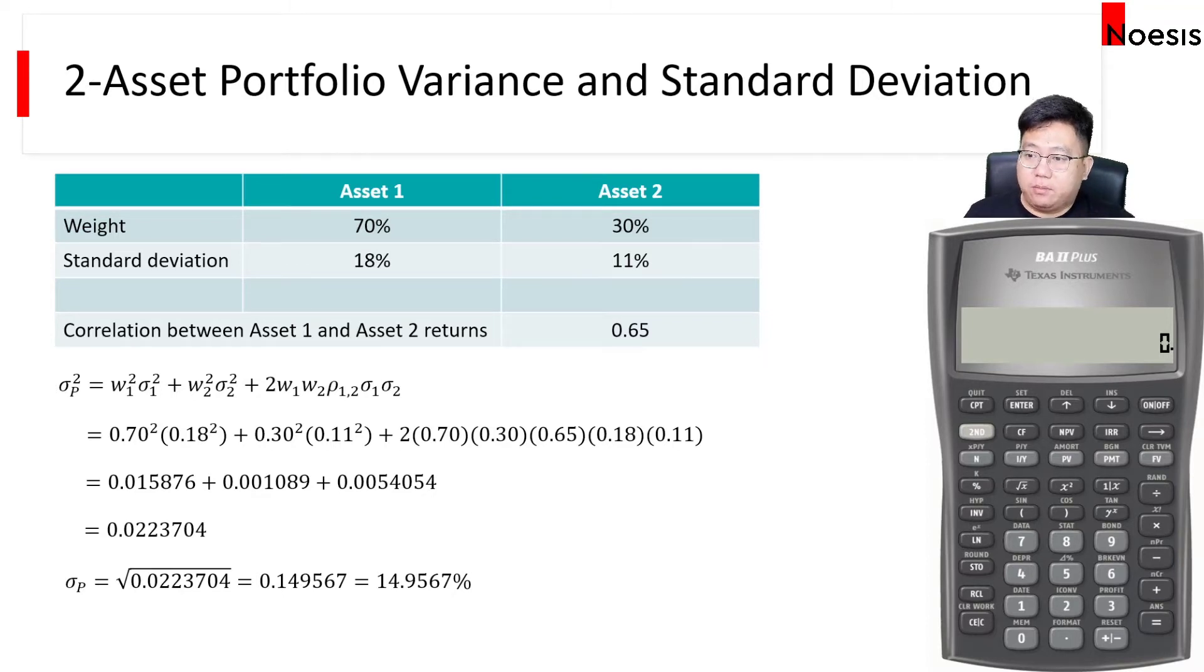Then we have the formula for the portfolio variance. What I'm going to do now—the solution is already here. I've converted everything from percentage to decimal when I do my computations. You may have your own preference of doing it, but my objective here is to show you how using the store and recall function can speed up the calculation and also minimize error.